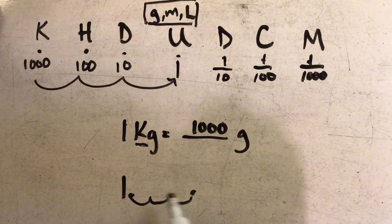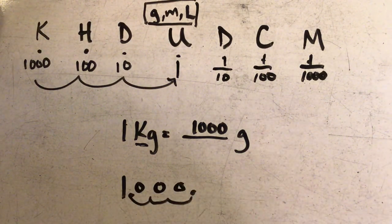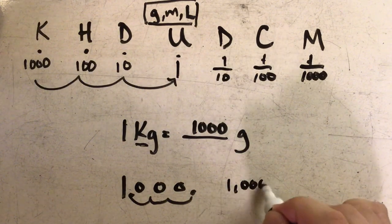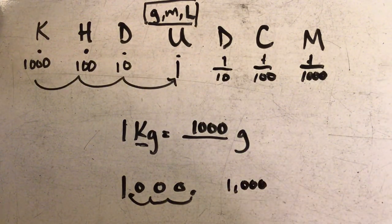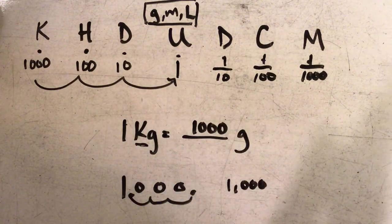Now I have one, two, three blank spaces that I need to annex zeros in, and that would give me one thousand grams. Well, you might be wondering, how do I know which way do I need to move the decimal in order to get the correct answer?